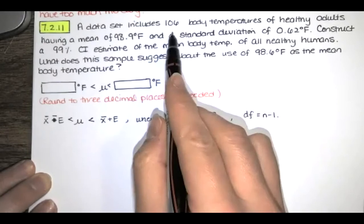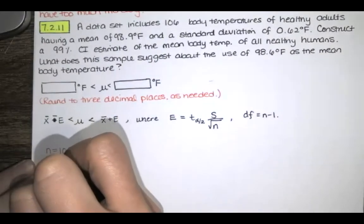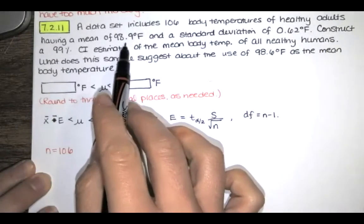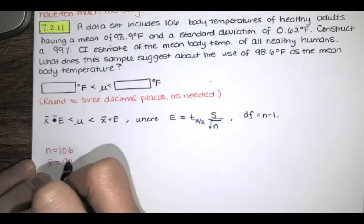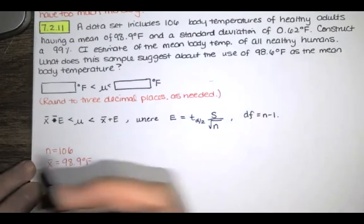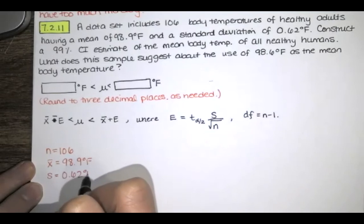First of all, the data set includes 106 temperatures, so n equals 106. The mean of that data set, x̄, is 98.9°F. And we're told that the standard deviation of that data set, S, is 0.62°F.